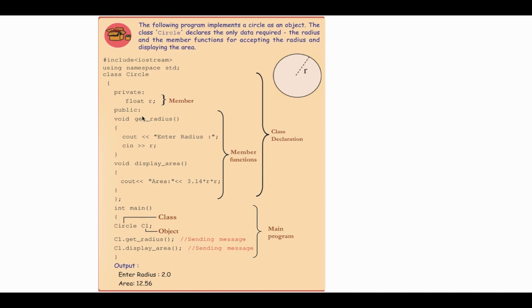In the public section, we declare two functions. The first function is GetRadius and the second is DisplayArea. In the GetRadius function, we will take input from the user. On the screen we display: Enter Radius, and then we read the input using cin >> r.